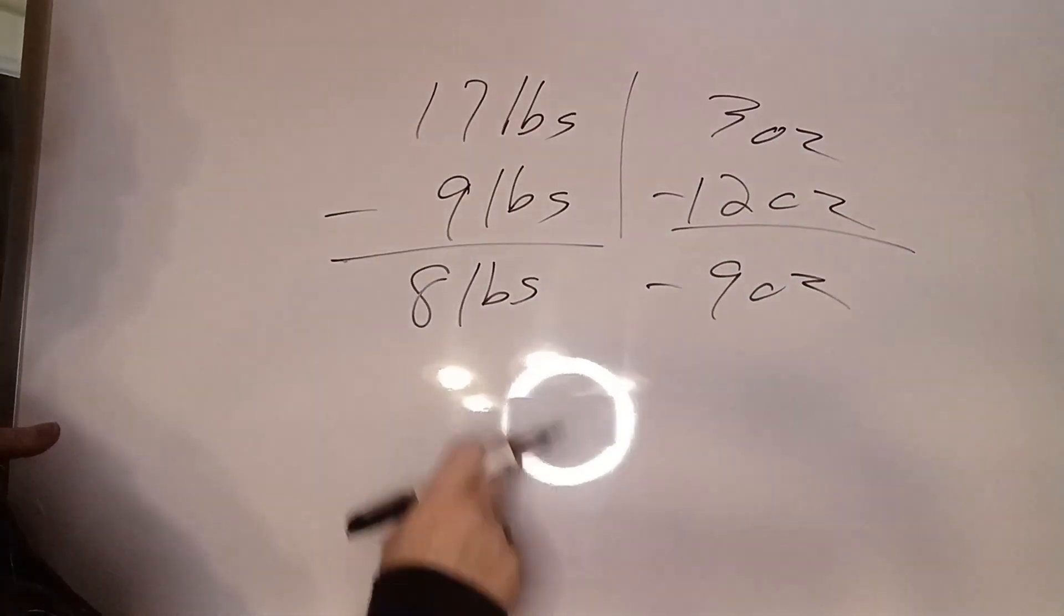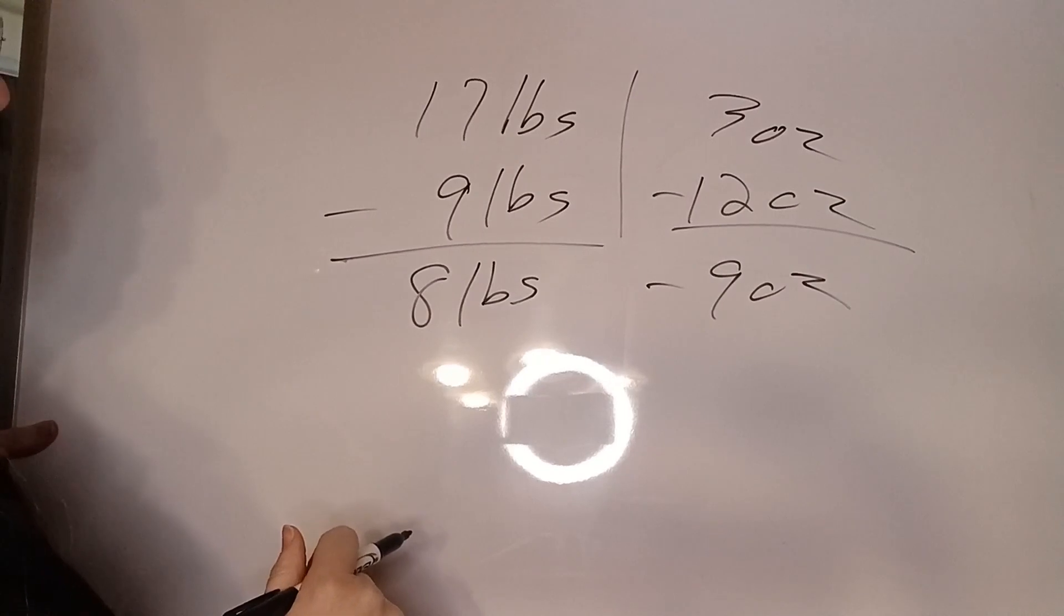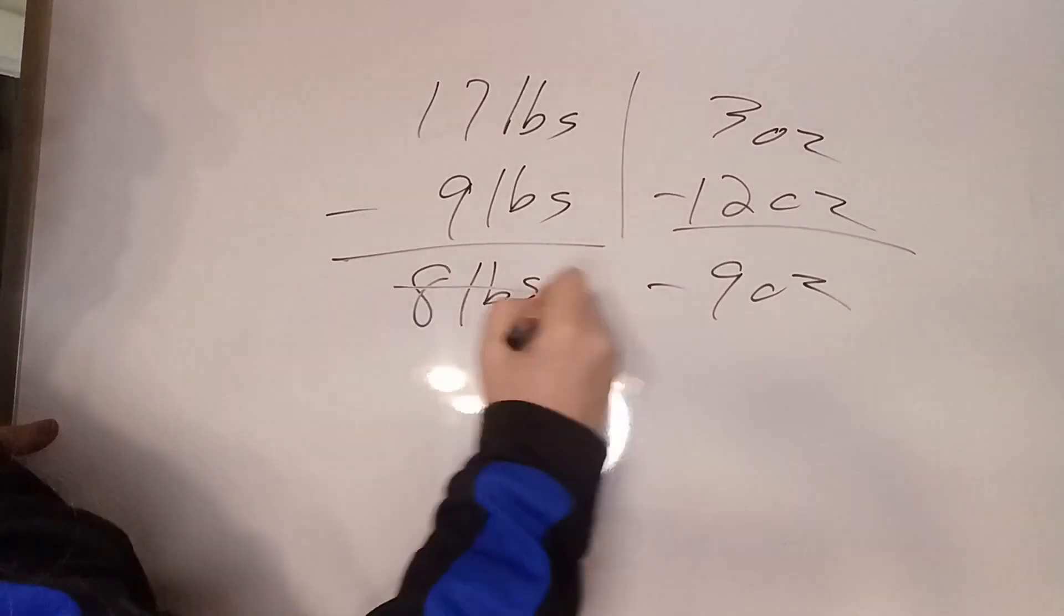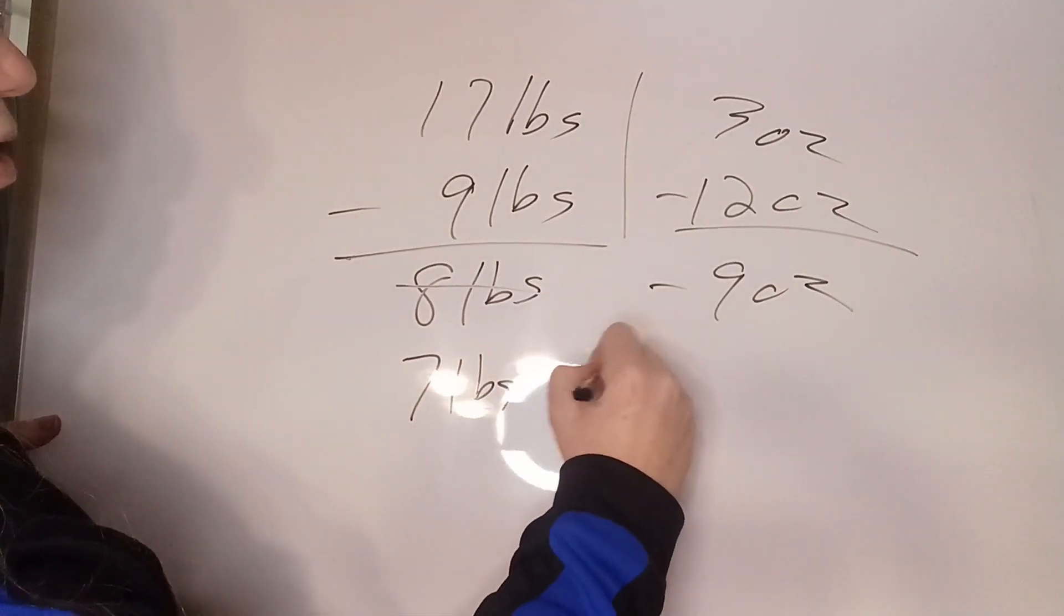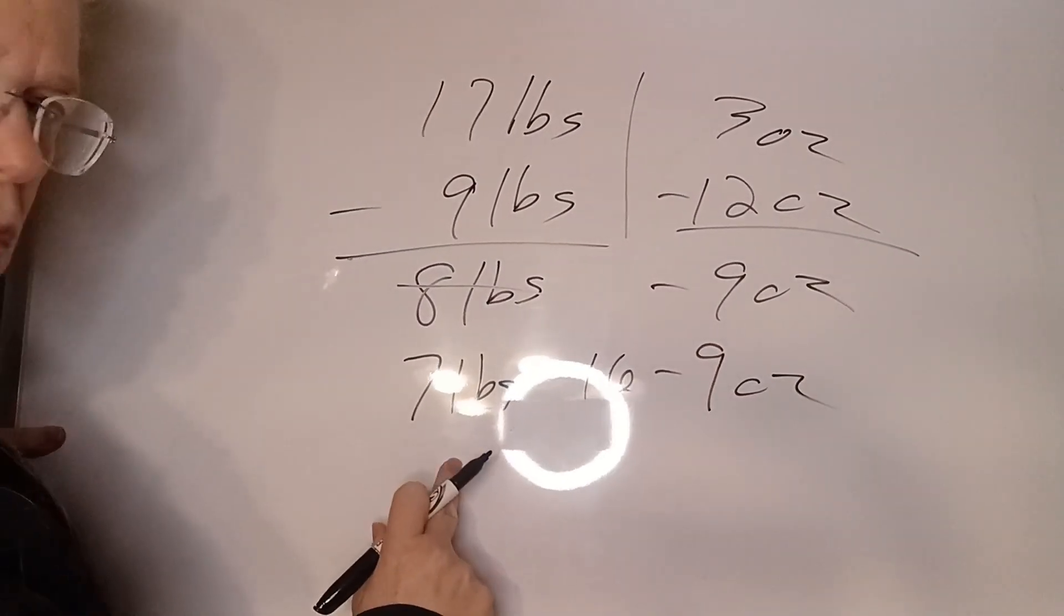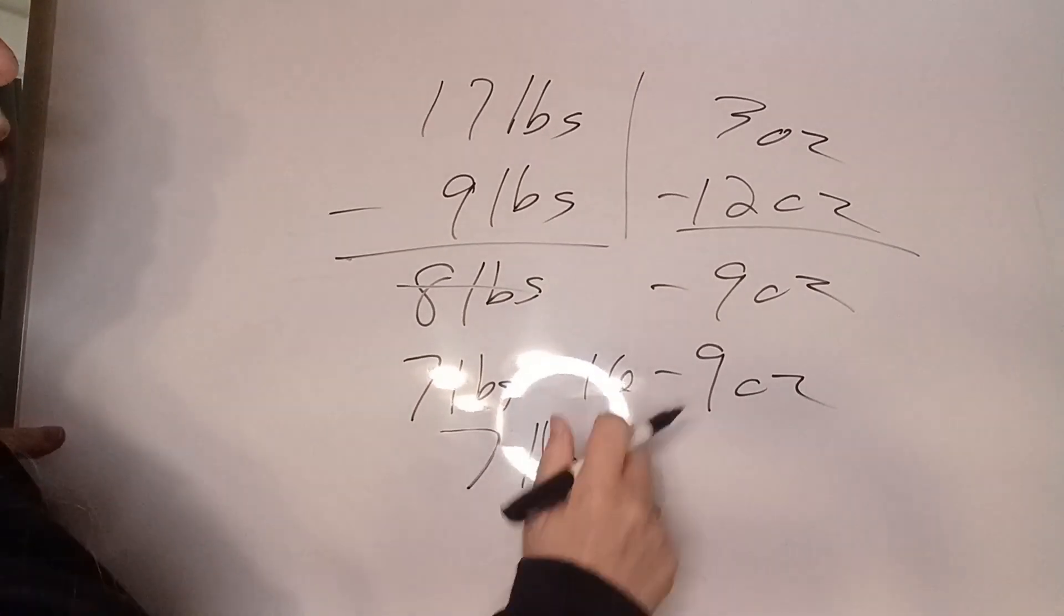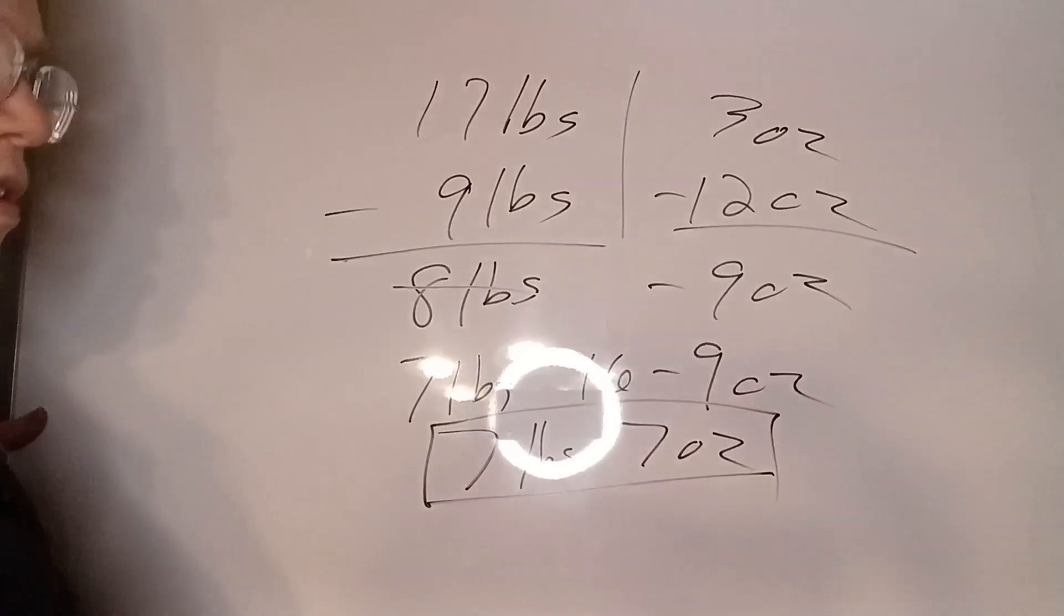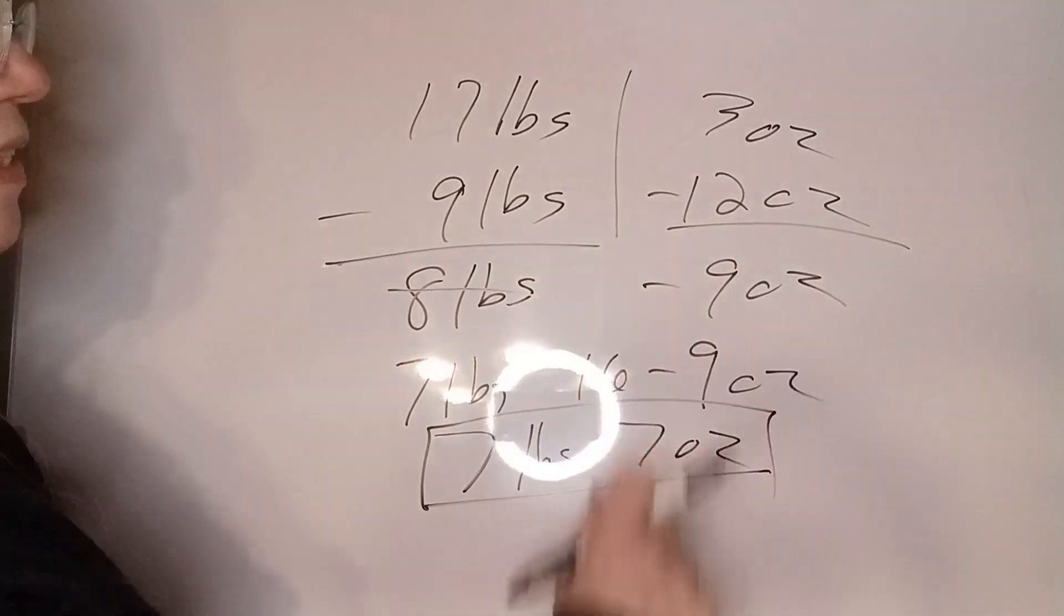So now we're going to do this part of the math. We actually are borrowing, despite the title that I put on it, because we're borrowing at this point. We're taking this and making it seven pounds, 16 ounces, minus nine ounces. So that is seven pounds, 16 minus nine is seven ounces. So we actually are borrowing, but we're borrowing when it's the easiest to do.